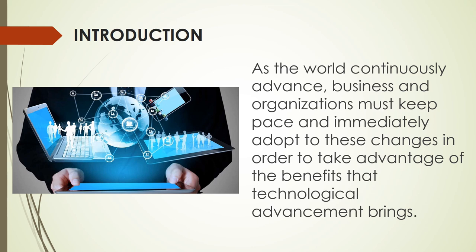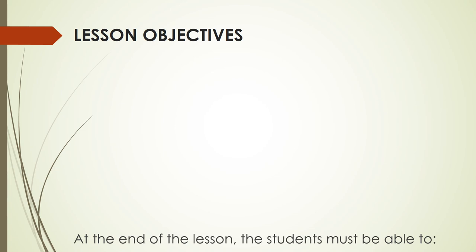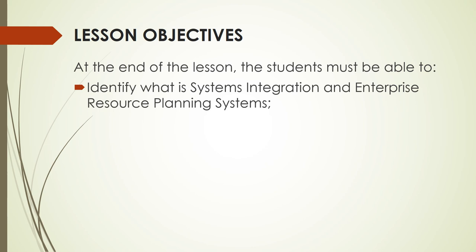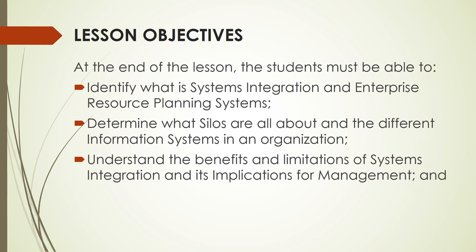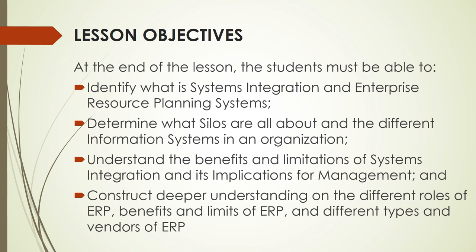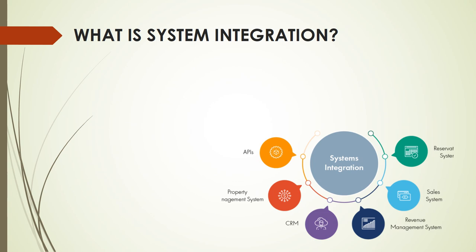As the world continues to advance, businesses and organizations must keep pace and immediately adapt to these changes in order to take advantage of the benefits that technological advancement brings. Here are our objectives: first, identify what is Systems Integration and Enterprise Resource Planning; second, determine what silos are all about and the different information systems in an organization; third, understand the benefits and limitations of Systems Integration and its implication for management; and lastly, construct different understanding on the different roles of ERP, benefits and limits of ERP, and different types and vendors of ERP.